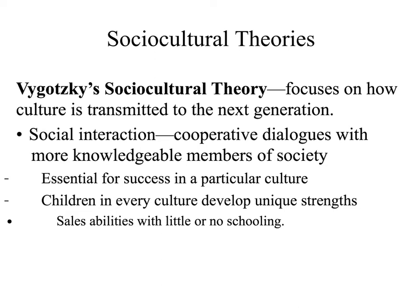Social interaction is basically the dialogue and interaction between the young members of a society and the more experienced members of society. According to Vygotsky, this is essential for a person to succeed in any particular culture — if a person is detached from their culture, they may not be able to interact well with members of their society. He argued that children in every culture will develop unique strengths and abilities based on interacting with people.